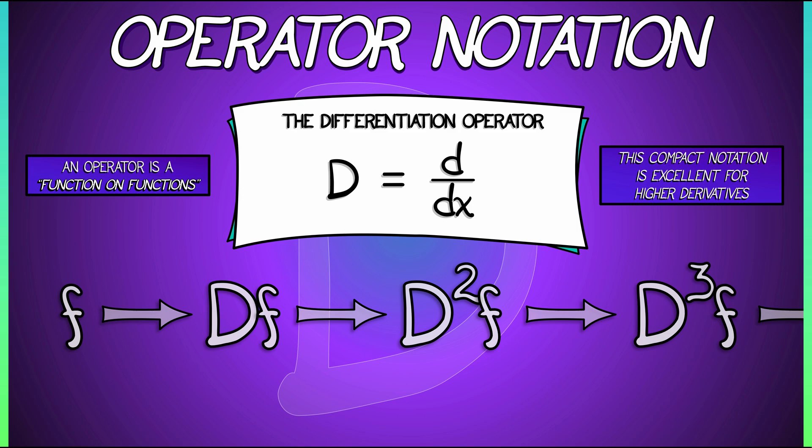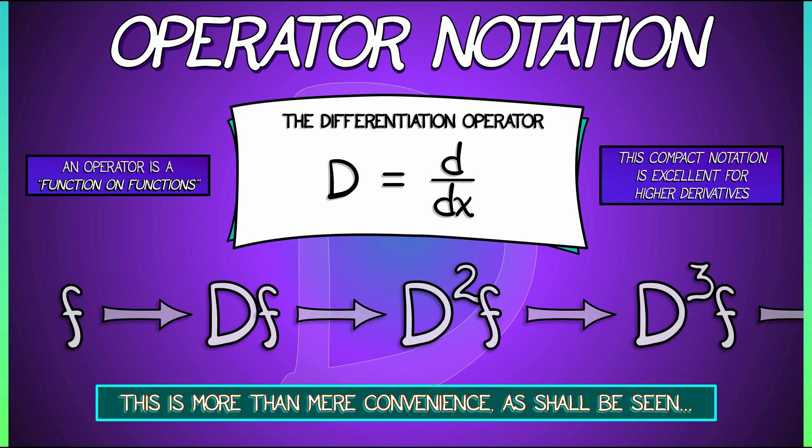So there's a sense in which we're actually taking powers of this operator. D squared is an operator that takes in a function f and returns the second derivative. Now, this is just notation, and it's simply convenient. There's not so much stuff going on with this capital D. But this is really more than just convenience, as we will see later when we spend more time thinking about differentiation as an operator.